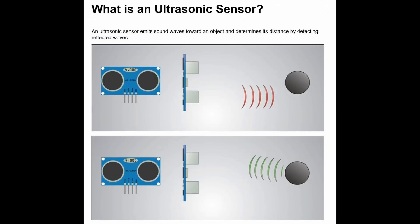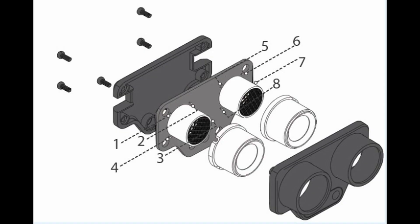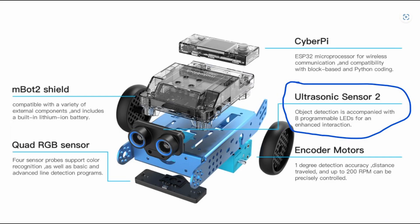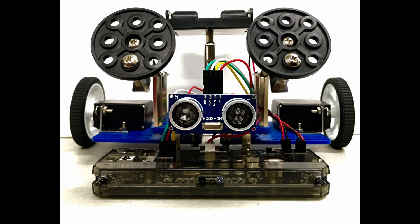Ultrasonic sensors are able to detect the distance between the sensor and the measured object. The left probe of the ultrasonic module is responsible for transmitting ultrasonic waves, while the right probe is responsible for receiving ultrasonic waves.